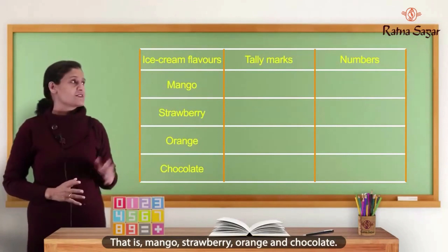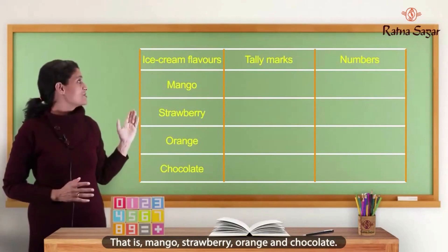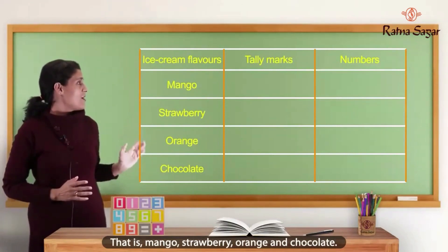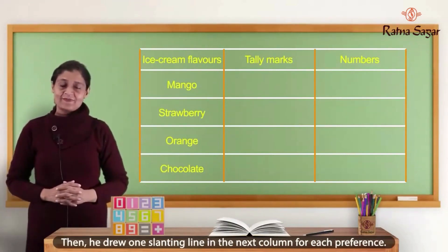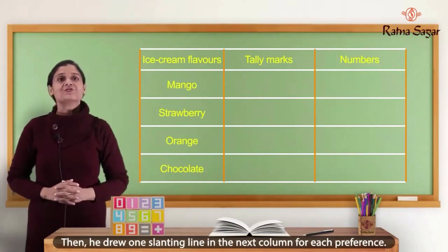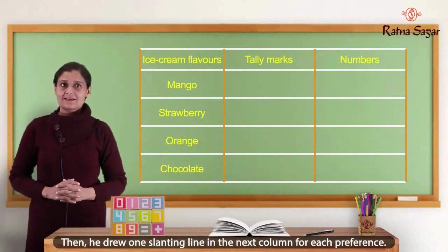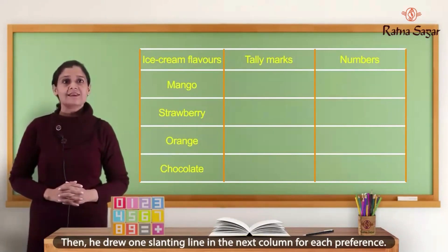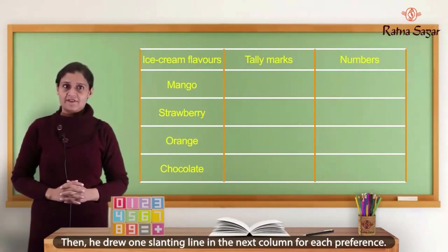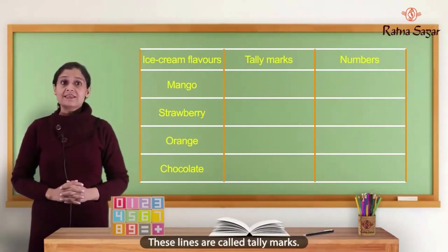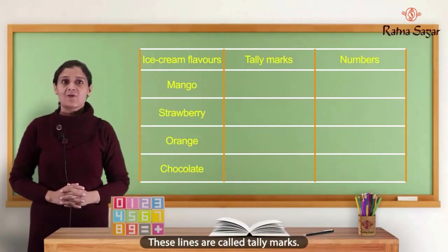That is mango, strawberry, orange, and chocolate. Then he drew one slanting line in the next column for each preference. These lines are called tally marks.